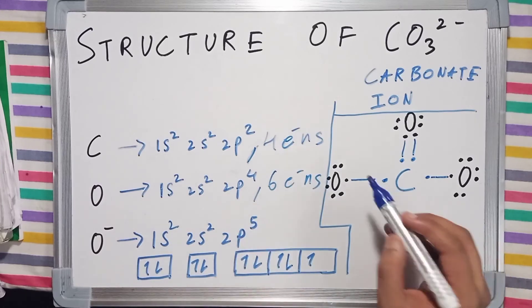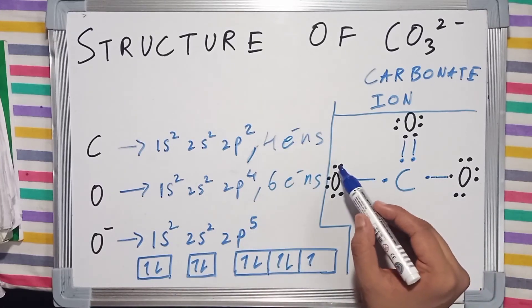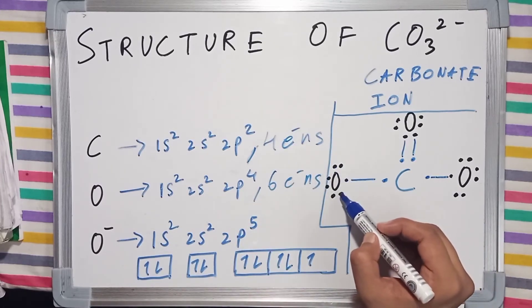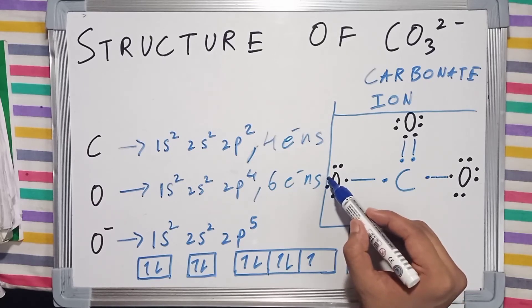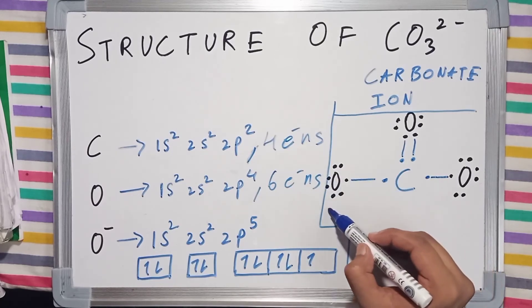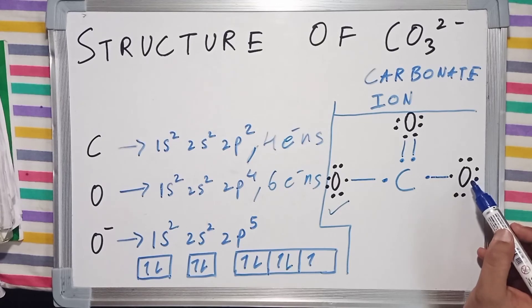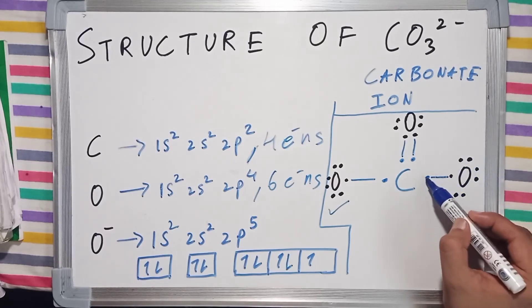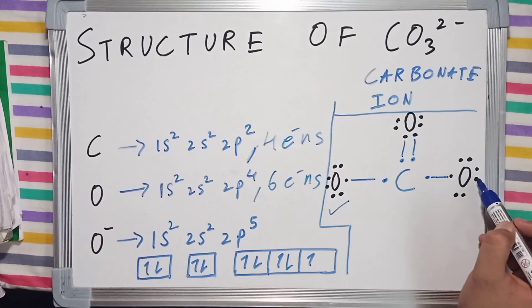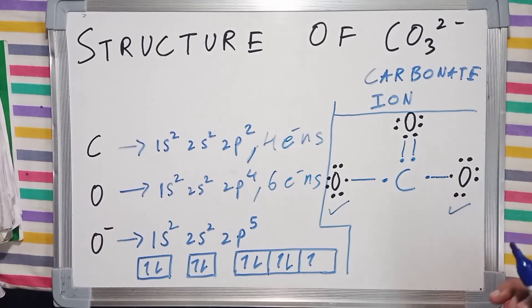Now let's count the valence electrons. This oxide ion has 1, 2, 3, 4, 5, 6, 7, 8 electrons, so its octet is complete. For this oxygen: 1, 2, 3, 4, 5, 6, 7, 8. Its octet is also complete.